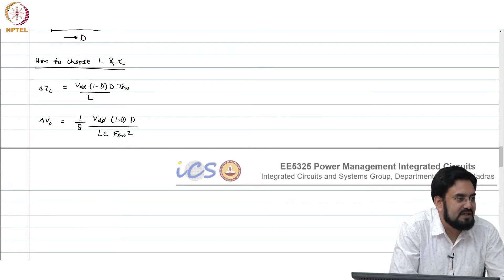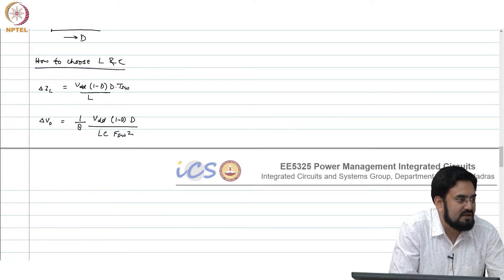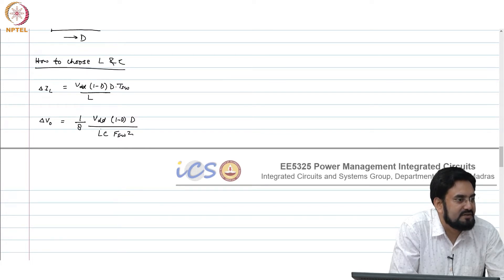So how do we choose which one should be large — C or L? L should be large. L should be large — but why?